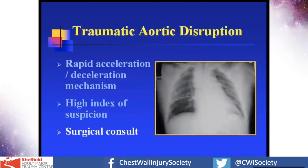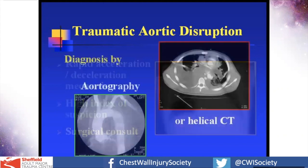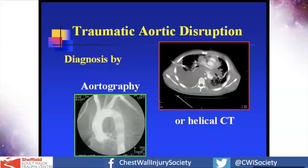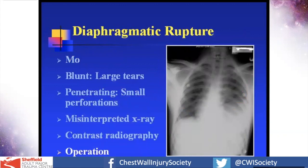Traumatic aortic injury is a spectrum of disease, ranging from a small tear on contrast-enhanced CT through to intramural haematoma or leaks of various types. It is primarily these days treated with vascular radiology rather than cardiac surgeons. Diagnosis is made by angiography — the typical position for filling defects is just beyond the left subclavian artery, where you can see haematoma and a leak. This is clearly a more troublesome injury.